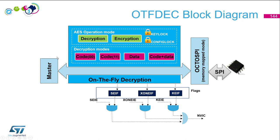This is the block diagram of the OTF DEC. Here we have the master of the bus and the OctoSPI. On one side, everything will be encrypted. On the other side, you can see everything in clear. The different AES operation modes allow you to encrypt and decrypt.